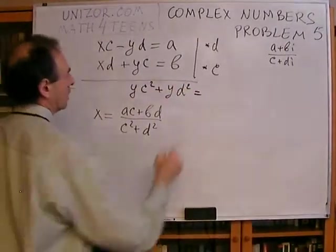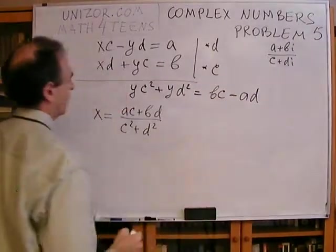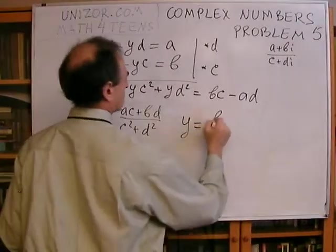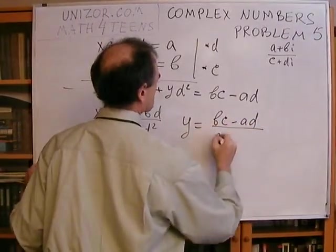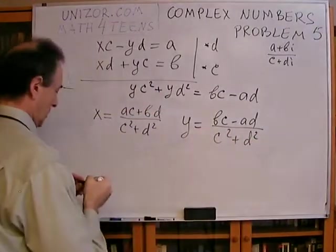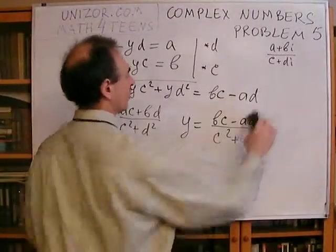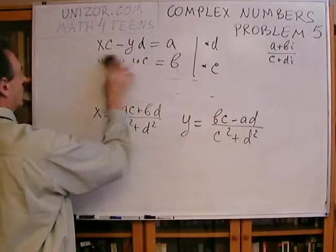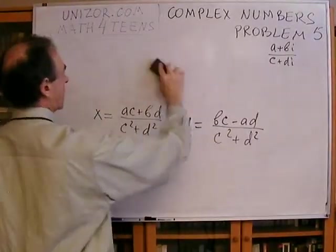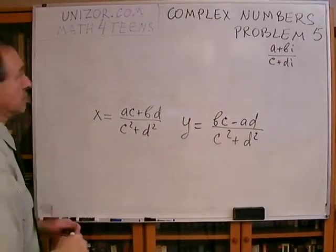It is equal to BC minus AD, from which we conclude that Y is equal to BC minus AD over C squared plus D squared. And, again, notice that in the denominator, we also have exactly the same thing, C squared plus D squared, which means it's correct whenever we divide by something which is not equal to zero. So, that's the answer.